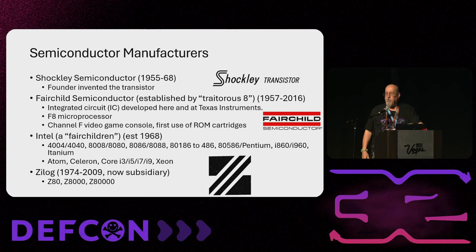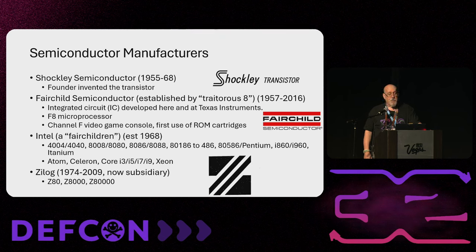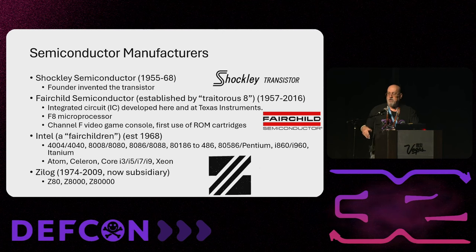Fairchild did create their own microprocessor called the F8 — which until recently I didn't even know existed — and their own game console called the Channel F. The big thing that made the Channel F important was it was the first to use ROM cartridges for games, which became the standard for all game consoles that followed — all the Ataris, the Nintendo, Super Nintendo, Sega Genesis — until they came along using CDs.